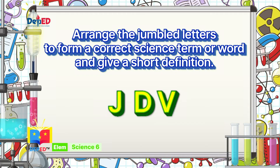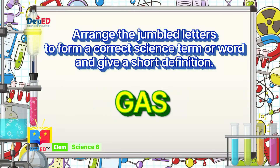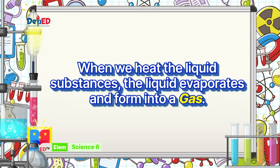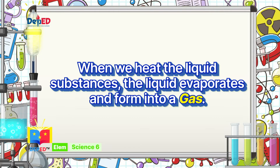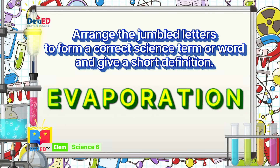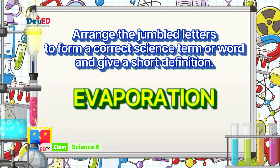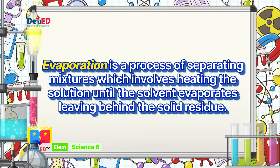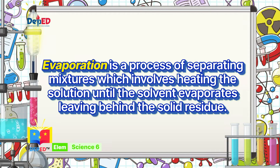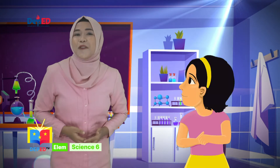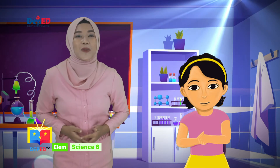The correct answer is gas. When we heat liquid substances, the liquid evaporates and forms into gas. The correct answer is evaporation. Evaporation is a process of separating mixtures which involves heating the solution until the solvent evaporates, leaving behind the solid residue. Well done, science-minded learners! Our friend Sissy is very happy because you're always ready to help her.